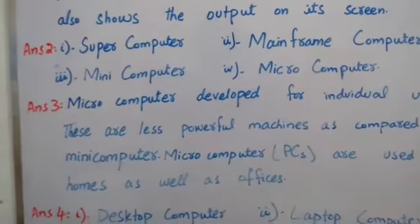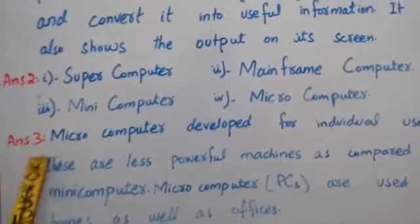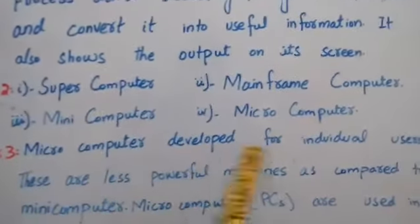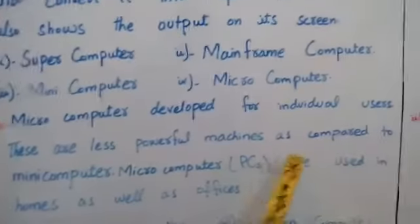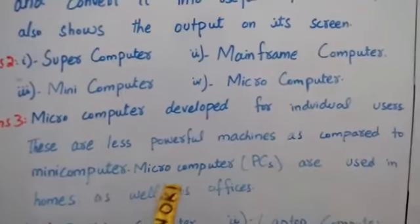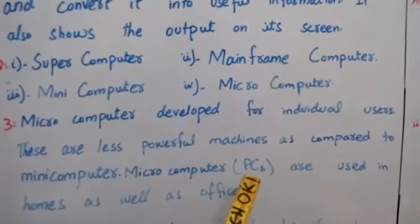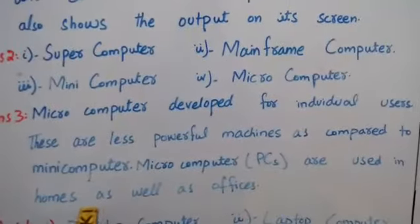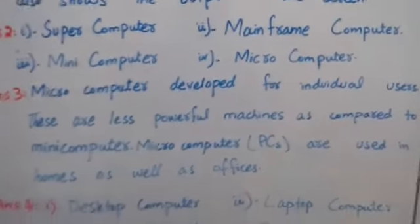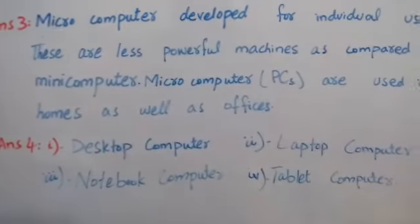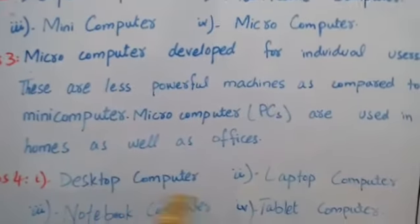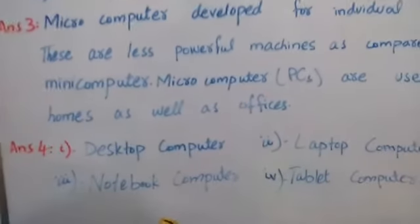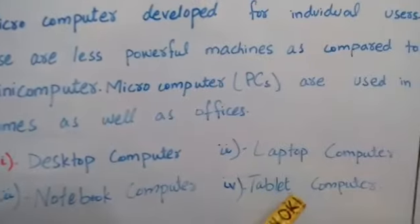Question number three: What is micro computer? Answer: Micro computer is developed for individual users. These are less powerful machines as compared to mini computers. Micro computers, also called PCs, are used in homes as well as offices. Question number four: Name the different types of personal computer. Answer: Desktop computer, laptop computer, notebook computer, and tablet computer.